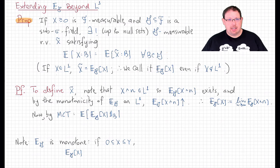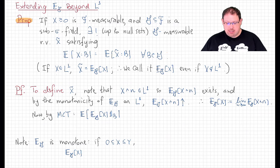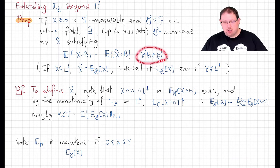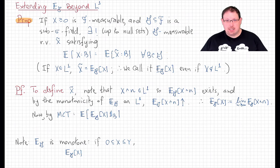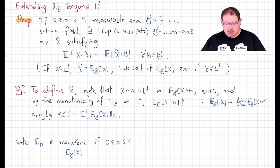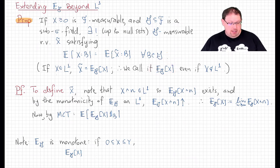We're just going to define it using, again, the averaging property. If X is any non-negative F-measurable function and G is a sub-sigma field of F, then there is a unique, up to null sets, G-measurable random variable — call it X-twiddle — which satisfies that E[X · 1_B] = E[X-twiddle · 1_B] for all G-sets B. Since there is a unique such X-tilde, we're still going to call it the conditional expectation, even if X is not necessarily L1 but is positive.